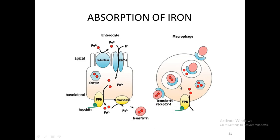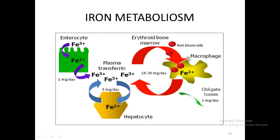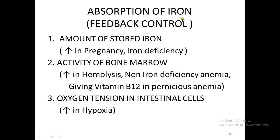So in summary: ferric iron enters the enterocyte only after being converted to ferrous by the reductase enzyme; then ferrous iron when it leaves the intestinal epithelial cell is changed back to ferric so it can be transported with plasma transferrin. Iron absorption is under feedback control.